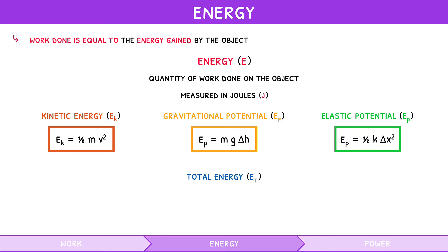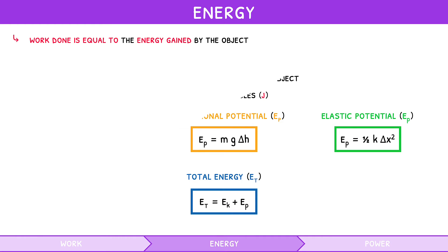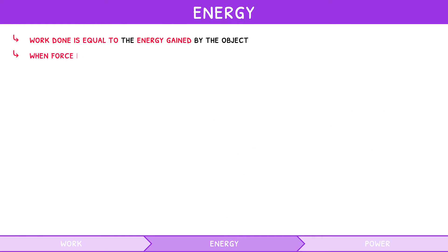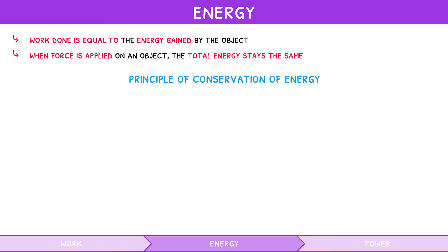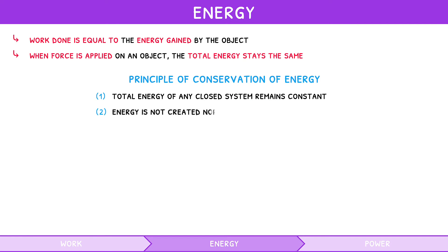The total energy of an object is defined as the sum of its kinetic and potential energies. Whenever a force is applied on an object, the total energy stays the same, termed the principle of conservation of energy. There are two rules to this theory: one, the total energy of any closed system remains constant; and two, energy is not created nor destroyed — it only changes form.